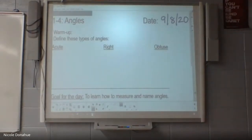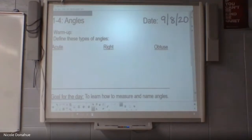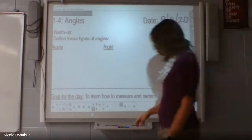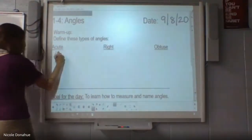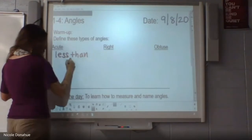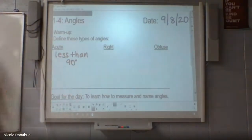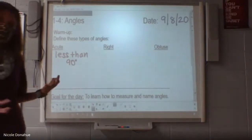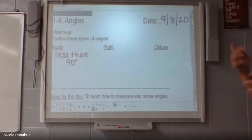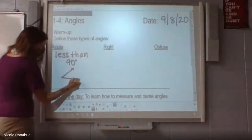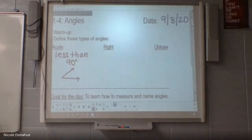Any volunteers? Any of them that you want to define for us — right, acute, or obtuse? You guys had good stuff written down, so what do you got? Yeah, so acute would be smaller than 90 degrees, or less than 90 degrees — that's fine. I'm assuming a lot of you drew an acute angle. It kind of looks like the typical angle you would draw if I said 'draw an angle.' It's kind of like a little bird beak — so that's an acute angle, anything less than 90 degrees.